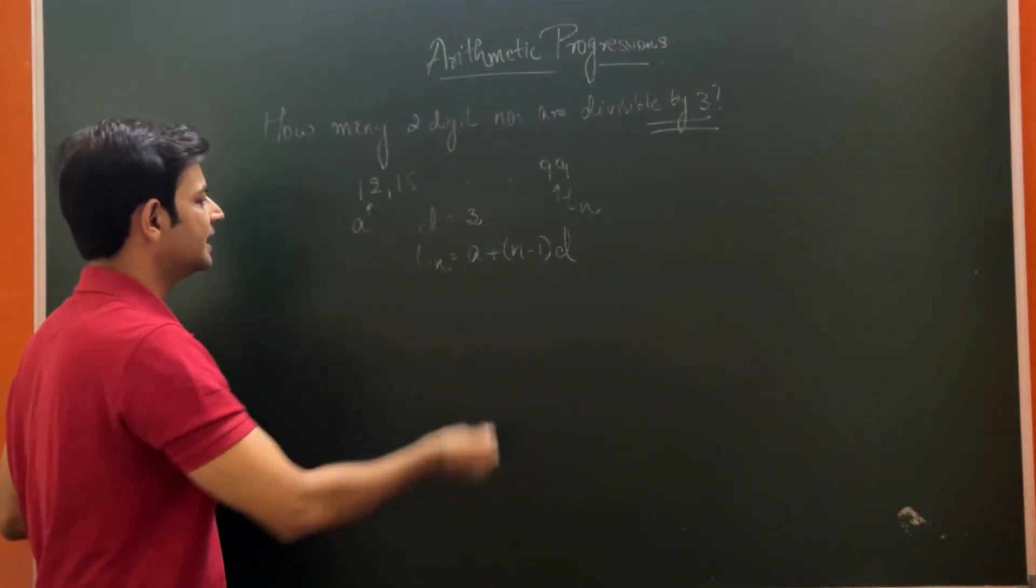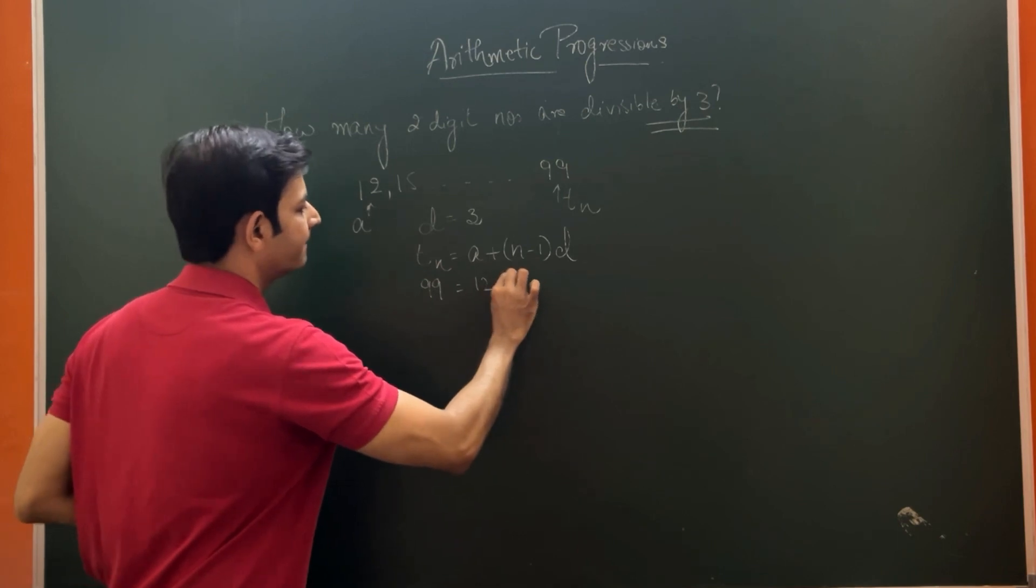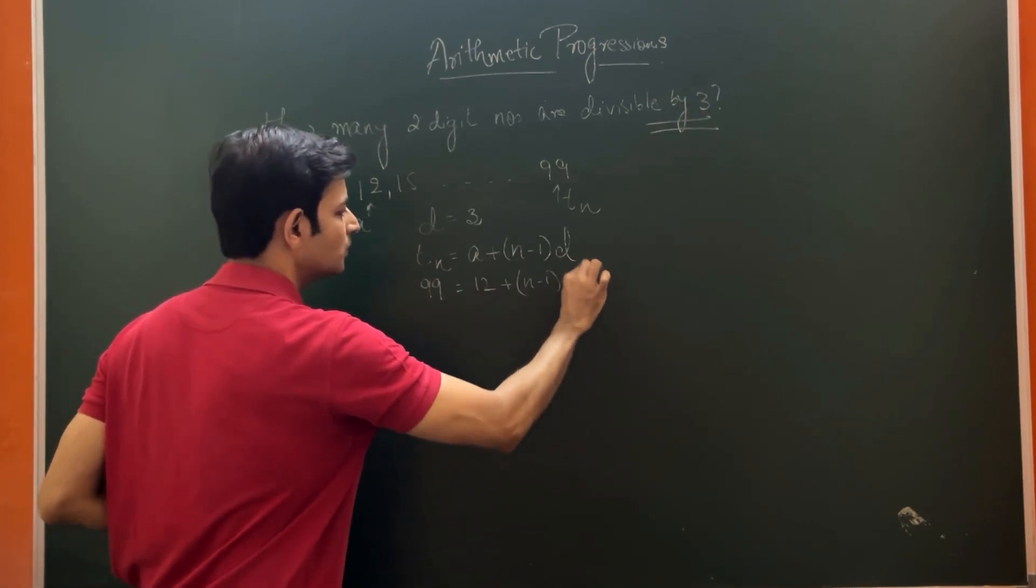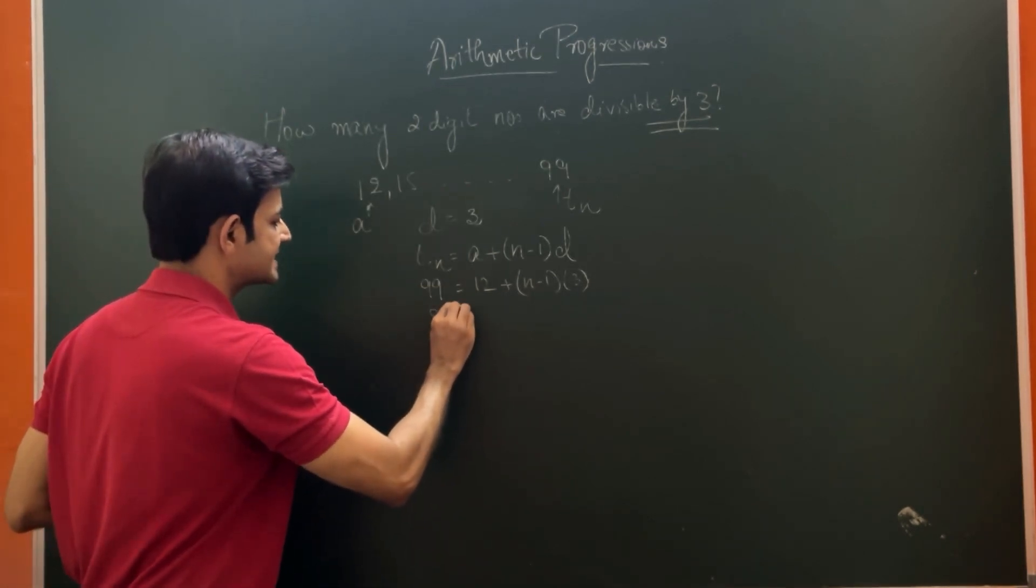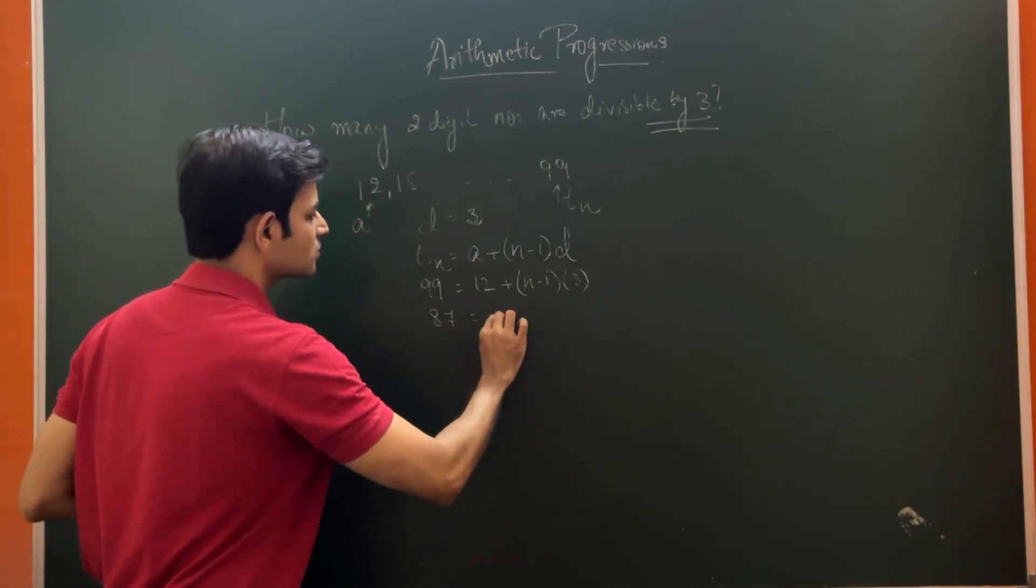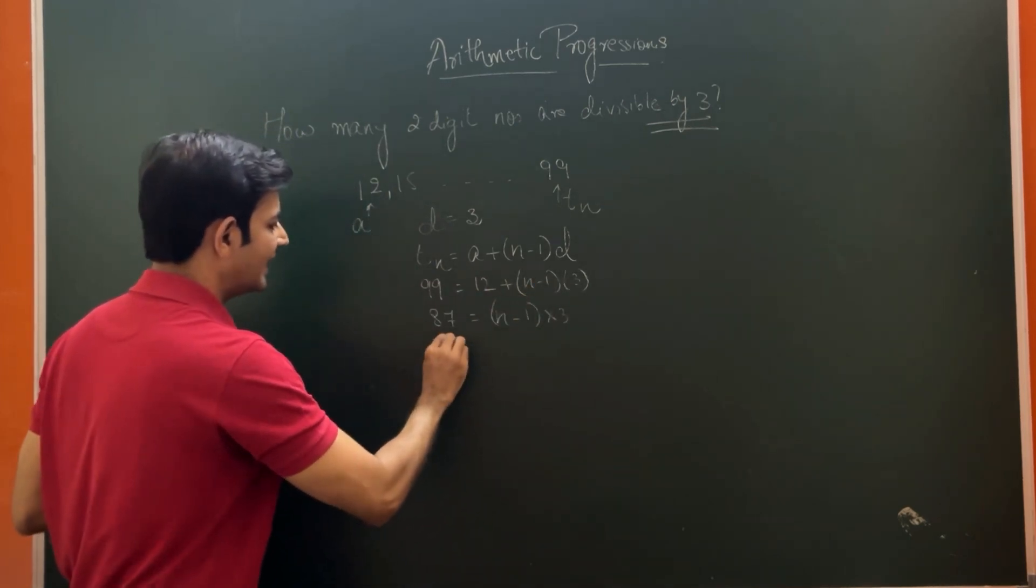TN is equal to A plus N minus 1 into D. TN here is 99. So 99 is equal to 12 plus N minus 1 into 3. We take this 12 here, so it becomes 87 is equal to N minus 1 into 3.